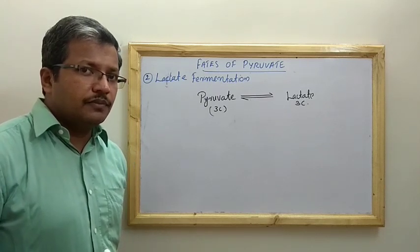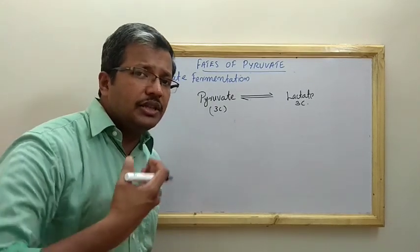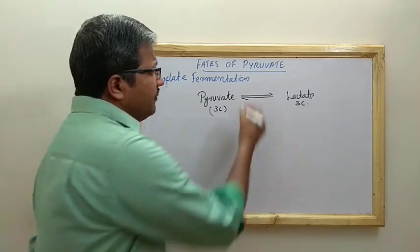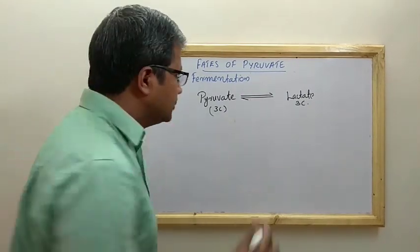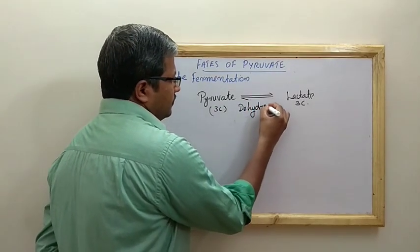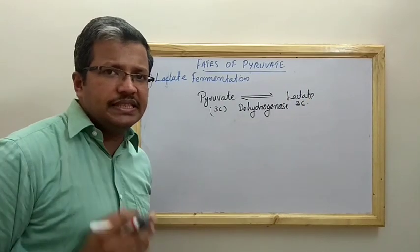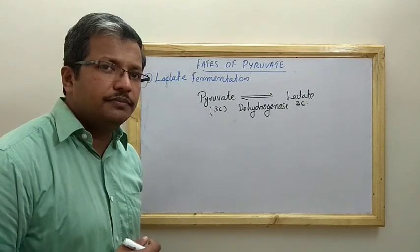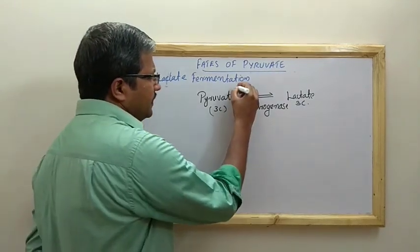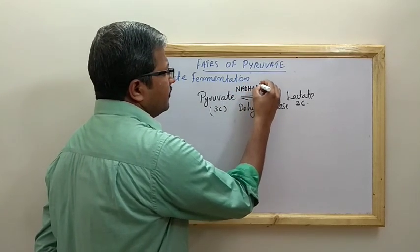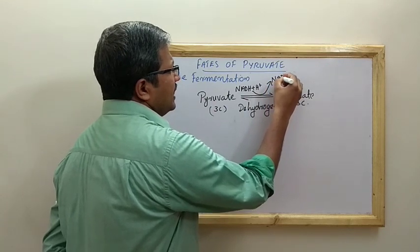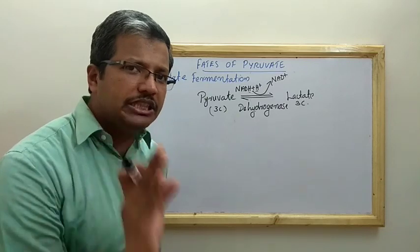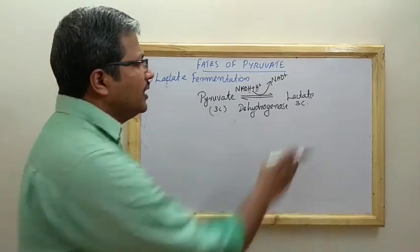In the previous step (alcohol fermentation), pyruvate underwent decarboxylation and reduction to form ethanol. Here, pyruvate undergoes only reduction to form lactate. The enzyme is lactate dehydrogenase. The coenzyme is NADH + H⁺, which is oxidized to NAD⁺, and those two hydrogens are added to the C=O of pyruvate to form CHOH — producing lactate.